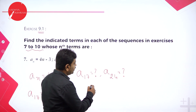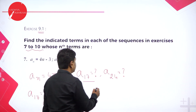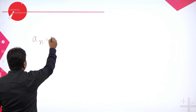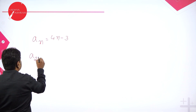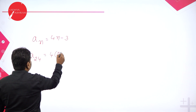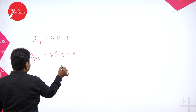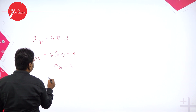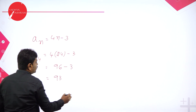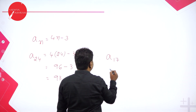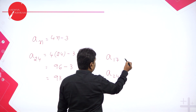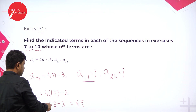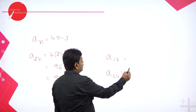Simplify, and you will get it. Then they want you to find A24. A-N is given as 4N minus 3. A24 means just put 24 in place of N: 4 into 24 minus 3. That gives 96 minus 3, which is 93. So A17 equals 4 into 17 minus 3, which is 68 minus 3 = 65. And A24 = 93. These are the two values.